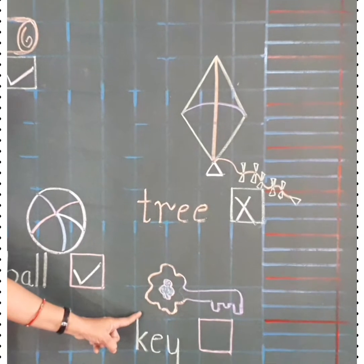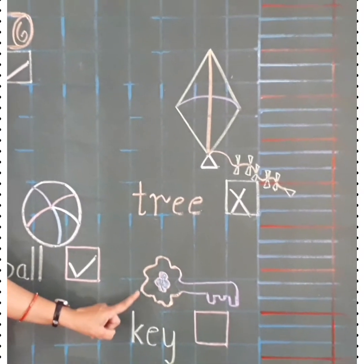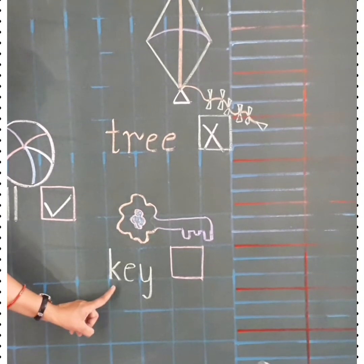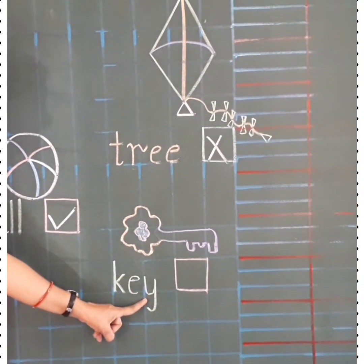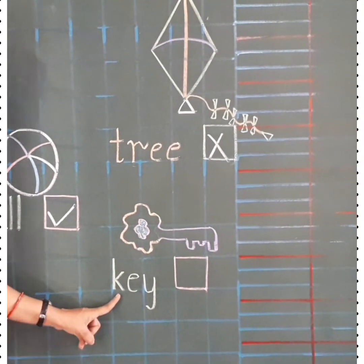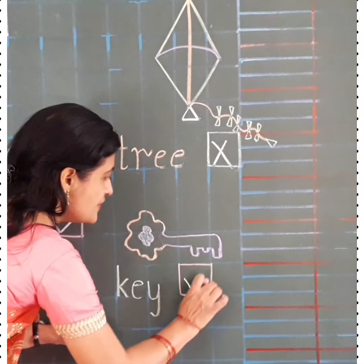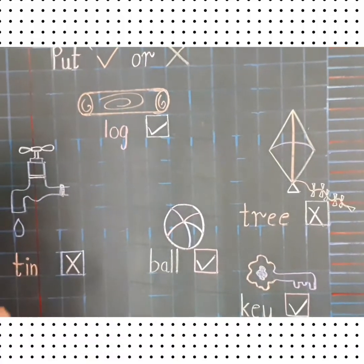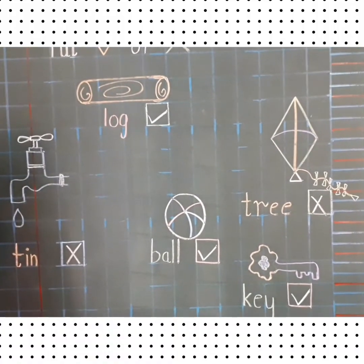And now the last one. What is this? A key. And now let's read the spelling. K-E-Y key. Yes. This is the correct spelling of a key. So we will put tick in this box. So kids, I hope you understood this concept very well.